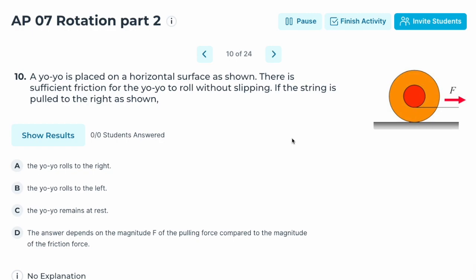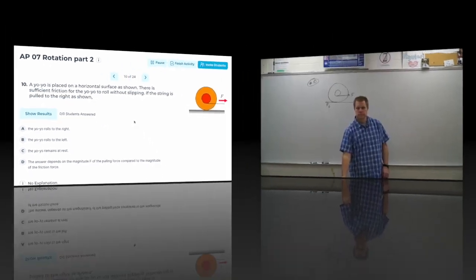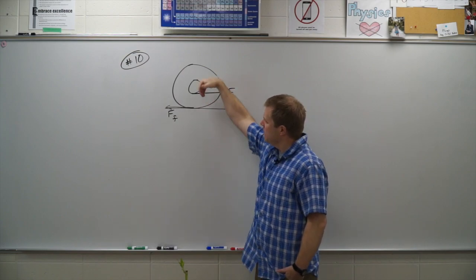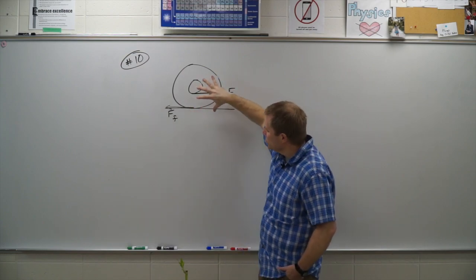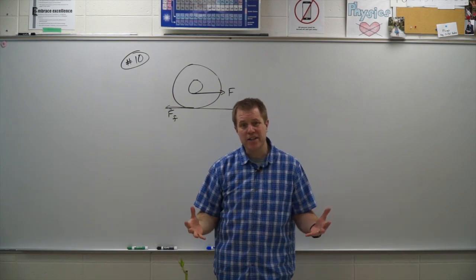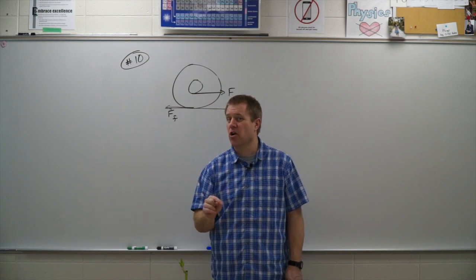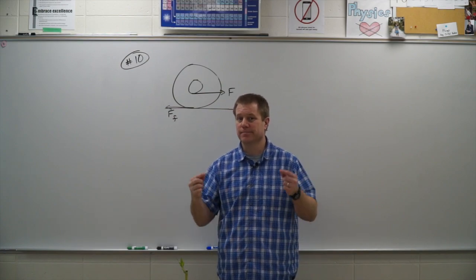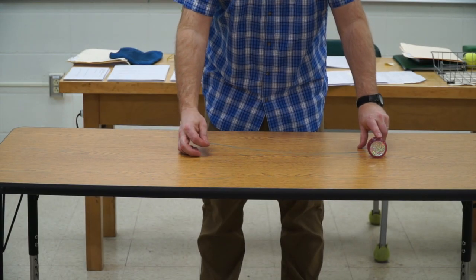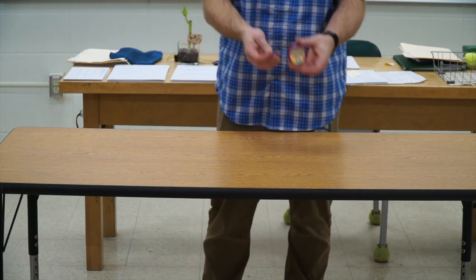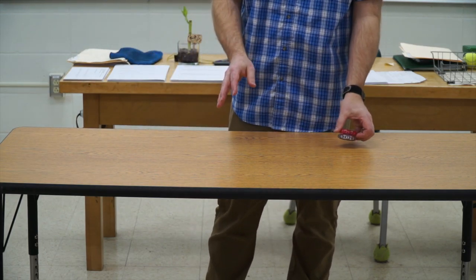Number ten: the yo-yo is placed on the same surface, but now the force is applied at the bottom of the center. One force tries to rotate it one way and the force of friction tries to rotate it the other way. Let's look at this in action and then solve to see which direction it actually rotates — we observe that it rolls back up.